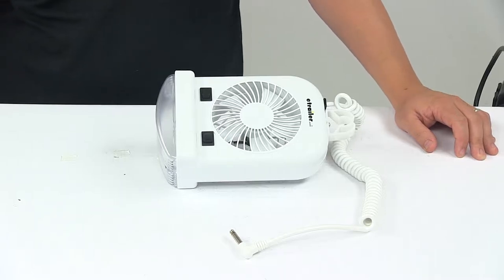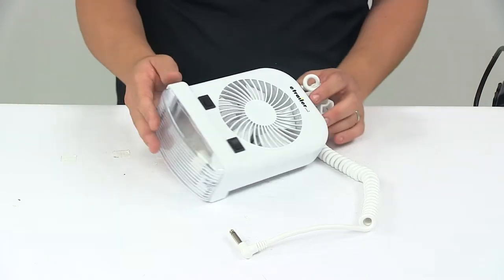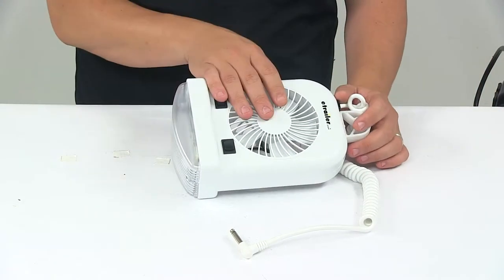Today, we're taking a look at an RV interior bunk light with a built-in two-speed fan. This unit features an incandescent light on this side and a two-speed fan.